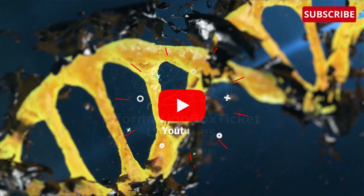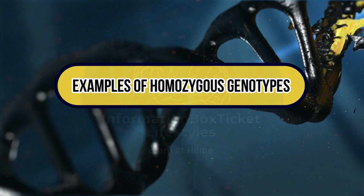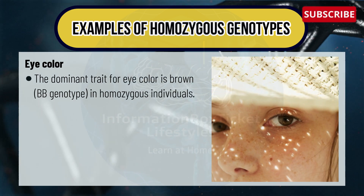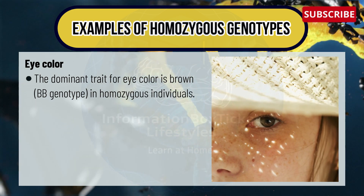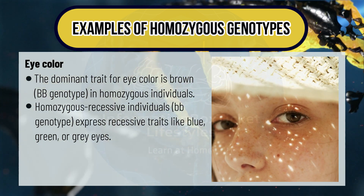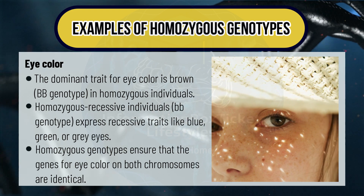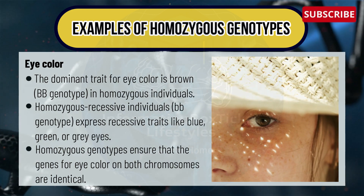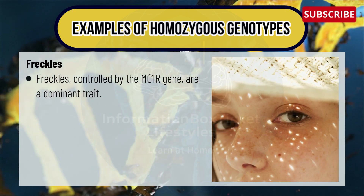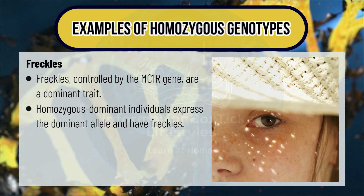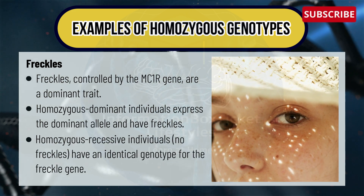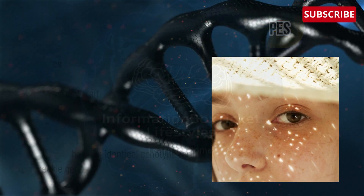Let's see the examples of homozygous genotypes. First, eye color: the dominant trait for eye color is brown, represented by the BB (capital) genotype in homozygous dominant individuals. Homozygous recessive individuals with the bb (small) genotype express recessive traits like blue, green, or gray eyes. Homozygous genotypes ensure that the genes for eye color on both chromosomes are identical. Second, freckles: freckles controlled by the MC1R gene are a dominant trait. Homozygous dominant individuals express the dominant allele and have freckles, while homozygous recessive individuals have no freckles.